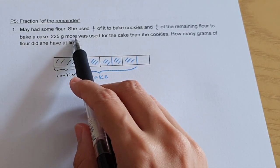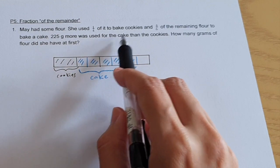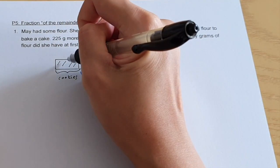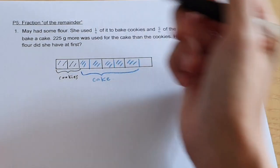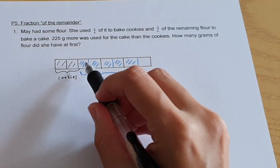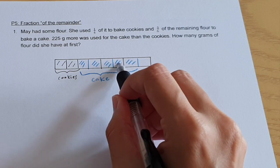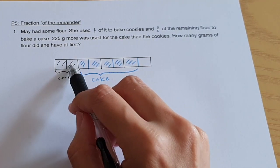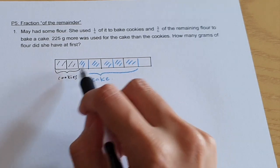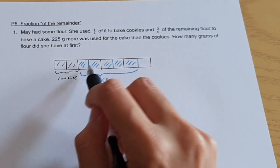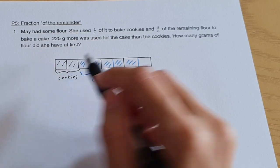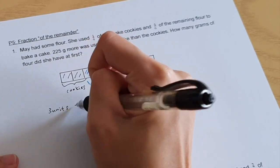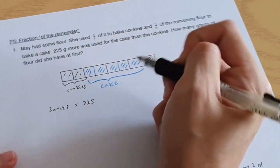225 grams more was used for the cake than the cookies. So for the cake I have one, two, three, four, five units and for the cookies I have two units. So the difference between the cake and the cookies is five minus two which is three units. So three units equals 225.